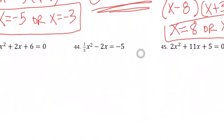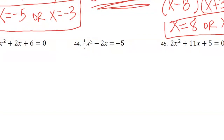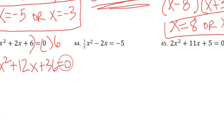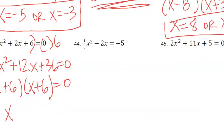Number 43 has a coefficient of 1/6. Rather than factoring it out as a GCF, we can multiply everything by 6. 1/6 times 6 is 1, so we get x squared plus 12x plus 36 equals 0. Two numbers that multiply to 36 and add to 12: that's 6 and 6. We get a repeated solution, so x equals negative 6.